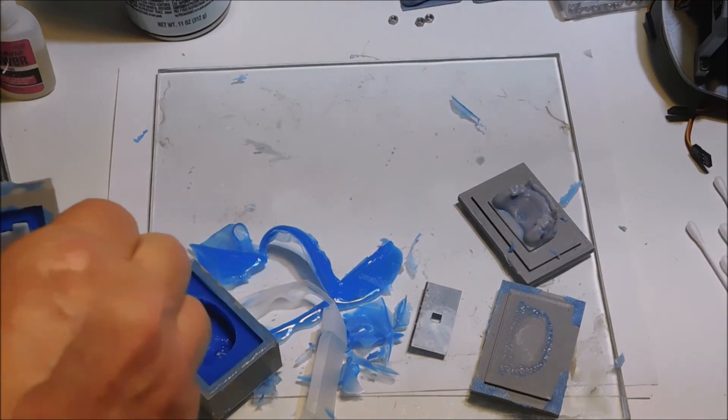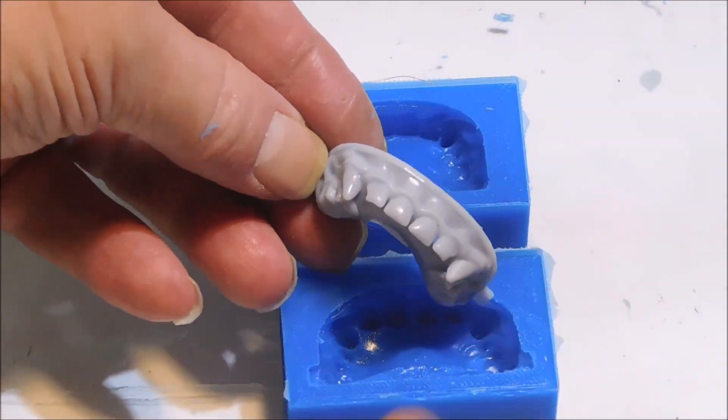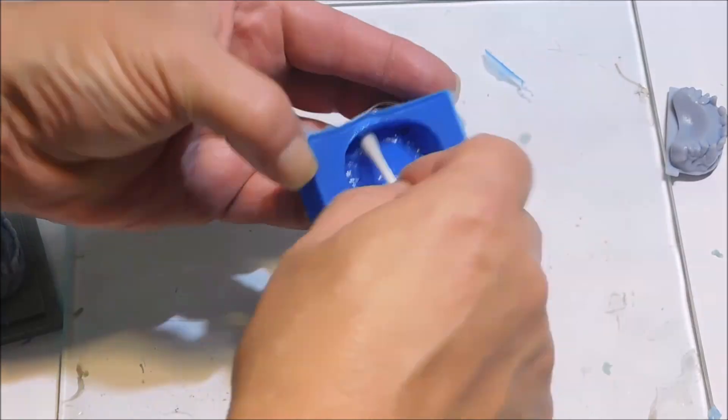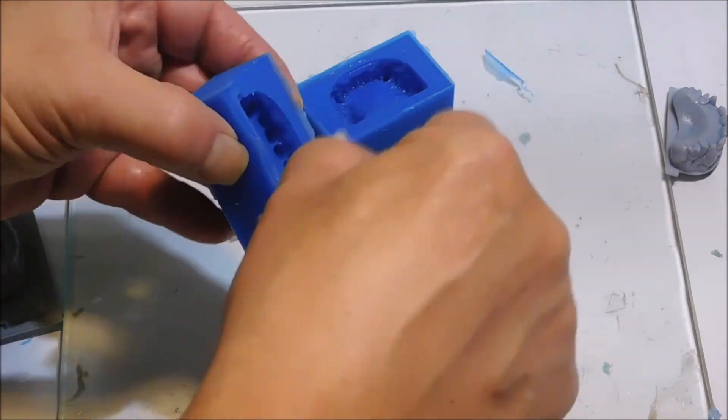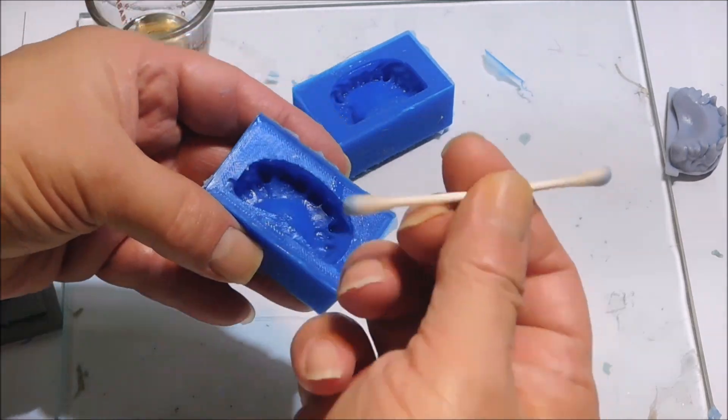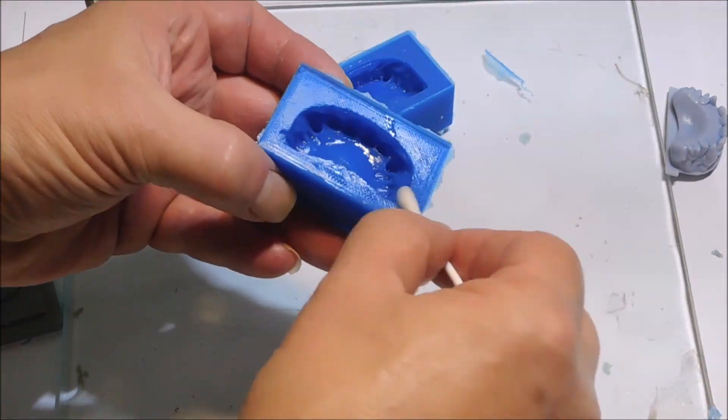I clean my molds with dental acrylic monomer, just wiping out to see if there's any blue resin or blue silicone on the Q-tip.